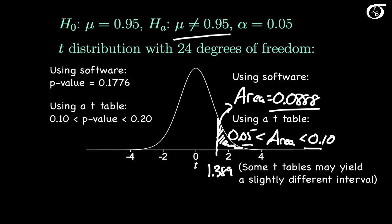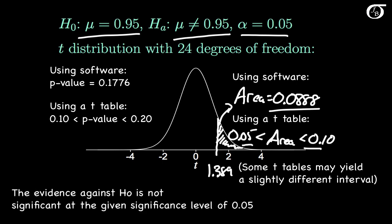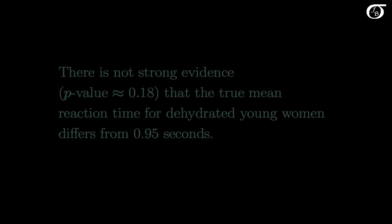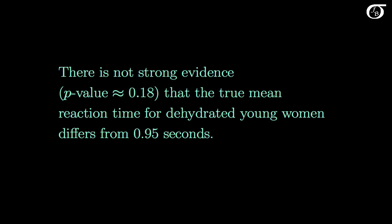The smaller the p-value, the greater the evidence against the null hypothesis, and our alpha level is a cutoff for significance. Since our p-value of 0.1776 is greater than alpha = 0.05, the evidence against the null hypothesis is not significant at that level. A p-value of 0.1776 is not considered very small and does not give strong evidence against the null. Therefore, there is not strong evidence that the true mean reaction time for dehydrated young women differs from 0.95 seconds.